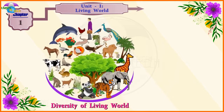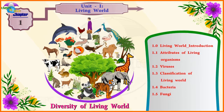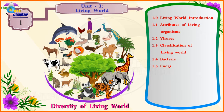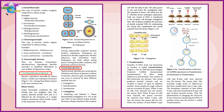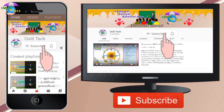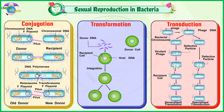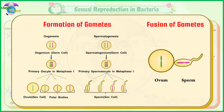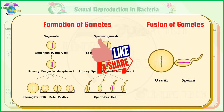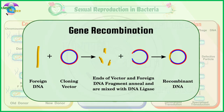Chapter 1: Living World, Unit 1: Diversity of Living World. Section 1.4.6 — Reproduction in Bacteria: Sexual Reproduction. Typical sexual reproduction involving the formation and fusion of gametes is absent in bacteria. However, gene recombination can occur in bacteria by three different methods.